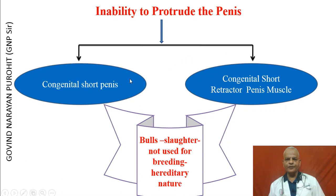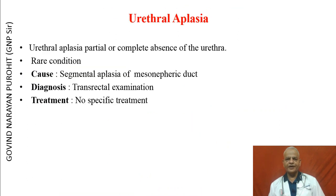Inability to protrude the penis could be because of congenital short penis or congenital short retractive penis muscle. Bulls with these types of problems should not be used for breeding because of the hereditary nature of the problem. Urethral aplasia is the partial or complete absence of the urethra. It is a rare condition. The cause is segmental aplasia of the mesonephric ducts, and diagnosis can be done by transrectal examination. There is no specific treatment.